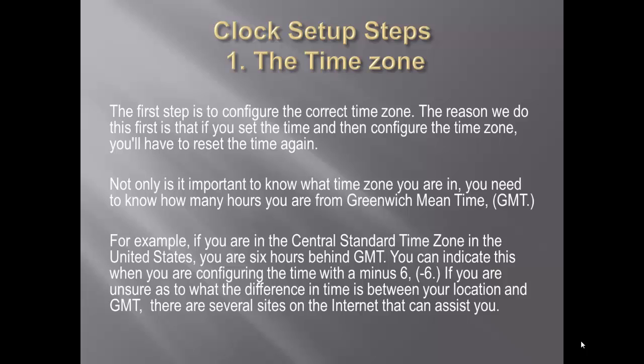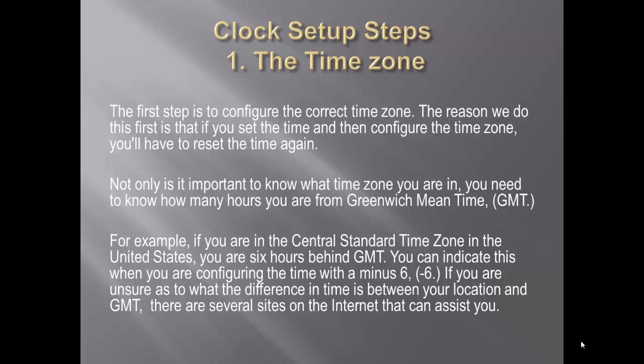For example, if you are in the Central Standard Time Zone in the United States, you are six hours behind GMT. You can indicate this when you are configuring the time with a minus six. If you are unsure as to what the difference is in time between your location and GMT, there are several sites on the internet that can assist you.